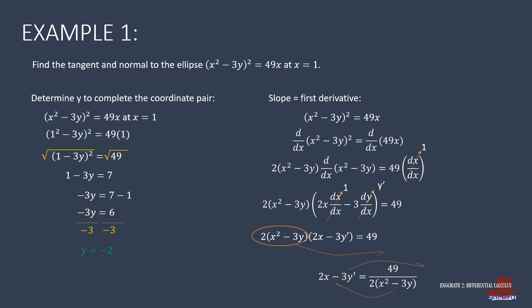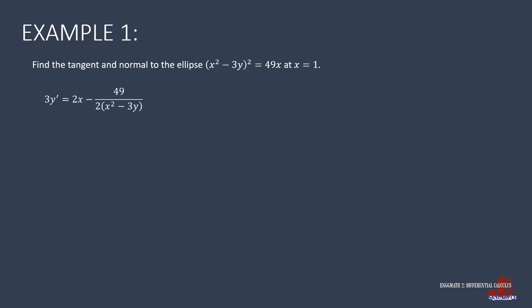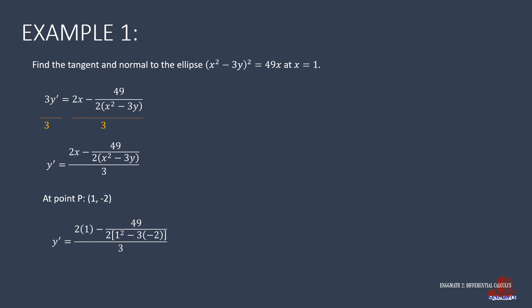We transpose the term with y prime to isolate it. We get 3y prime is equal to 2x minus 49 all over 2 times the quantity (x squared minus 3y). Dividing everything by 3 yields y prime equals [2x minus 49] over [2(x squared minus 3y)] all divided by 3. We then plug in the coordinates x=1 and y=-2 to get y prime equal to negative one half, which is the slope m of the curve at that point.